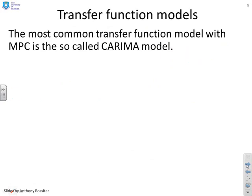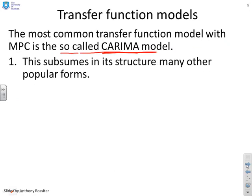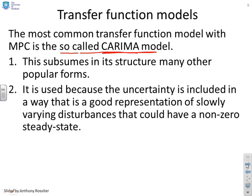Transfer function models. Now originally within predictive control, most people did use transfer function models; they were more popular, and they focused on this thing called the CARIMA model. Now this subsumes in its structure many other popular transfer function forms, so that's why we're just going to give this one and not bother about other variants. And it was used because the uncertainty, in particular disturbance uncertainty, is included in a way that allows you to represent, and here's the key point, slowly varying disturbances that could have a non-zero steady state. And for certainly in the process industry, people took the viewpoint that a slowly varying disturbance was perhaps a good representation of reality, so a model structure that captured this was suitable.